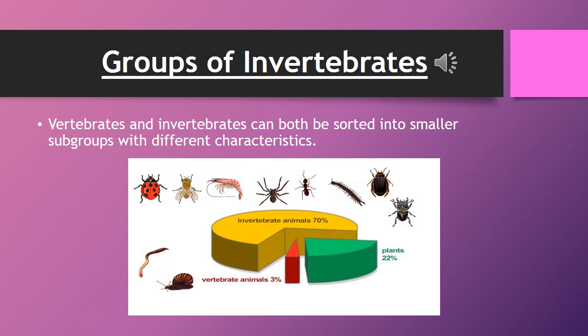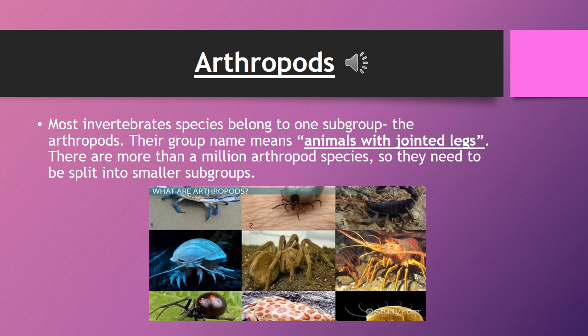Groups of Invertebrates. Groups of invertebrates are Arthropods, Molluscs, Echinoderms, Cnidarians, Annelids, Nematodes, and Flatworms. Invertebrate animals make up about 70% and vertebrate animals about 3% of all animals.